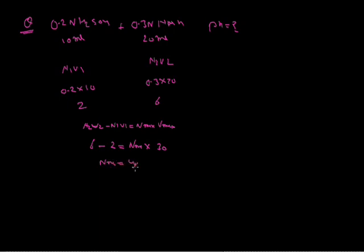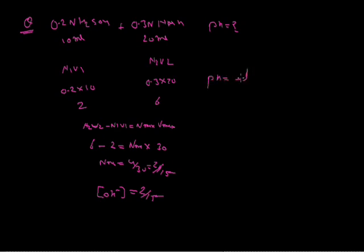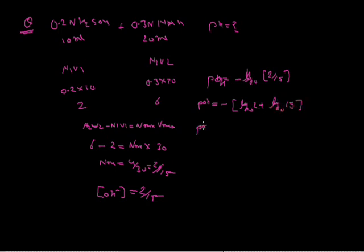Nmix equals 4 by 30, which simplifies to 2 by 15. Here Nmix represents concentration of OH minus because concentration of base is greater than concentration of acid. Concentration of OH minus equals 2 by 15. Since the solution is basic, first we calculate pOH. pOH equals negative logarithm of 2 by 15.